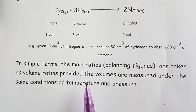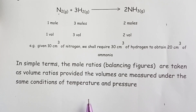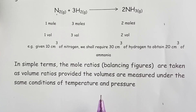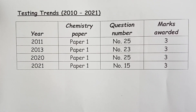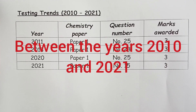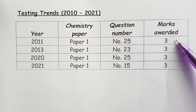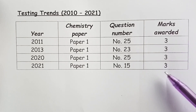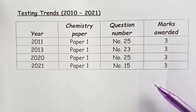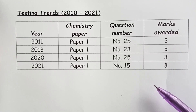Let us now proceed to testing trends at Kenya Certificate of Secondary Education, KCSE, by the Kenya National Examinations Council, KNEC. Guy-Lussac's law has been tested four times as presented in this table. All these times it has come in Paper 1, and the maximum marks awarded per question has been 3. We will now take you through the four questions as described in our table.